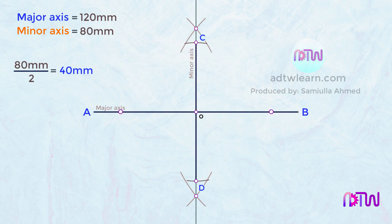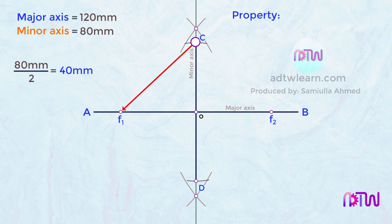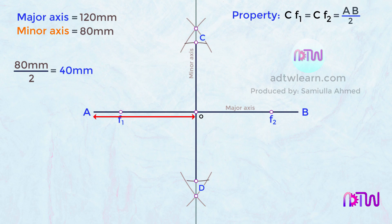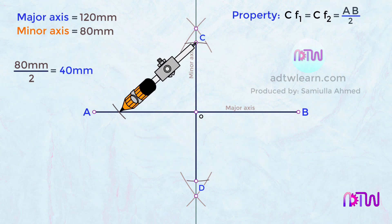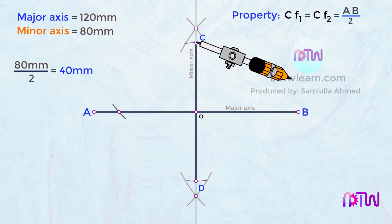Next, we need to mark focus points on the major axis. Remember an important property of an ellipse: the distance between point C and focus F1 equals the distance between point C and focus F2, which is equal to half of the distance AB. Therefore, to mark focus F1 and F2, take the distance AO — which is half of AB — keep the compass on point C, and mark an arc on line AB. This point will be our focus F1.